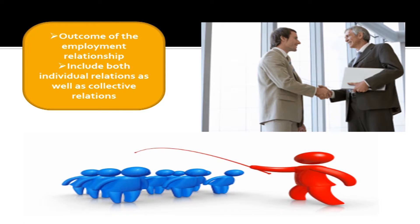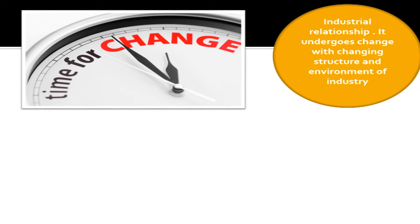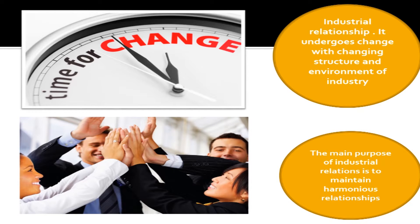These relations cannot exist without the two parties — employer and employee. Second, Industrial Relations include both individual relations as well as collective relations. Third, Industrial Relations is a dynamic and developing concept. It undergoes changes with changing structure and environment of the industry. The main purpose of Industrial Relations is to maintain harmonious relationships between management and labor, with a focus on accommodation — the parties involved develop skills and methods of adjusting to or cooperating with each other.